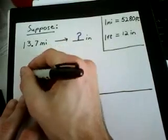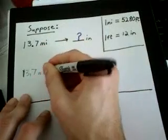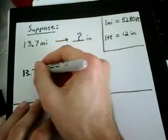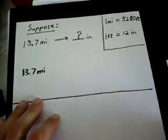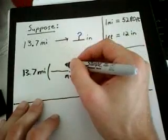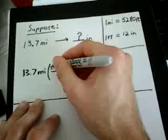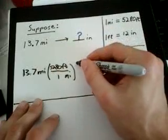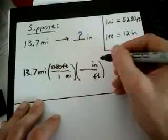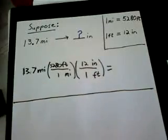So we start out with 13.7 miles in our conversion factor. We're going to convert from miles to feet. We said that one mile is equal to 5280 feet, and then we're going to convert from feet to inches.